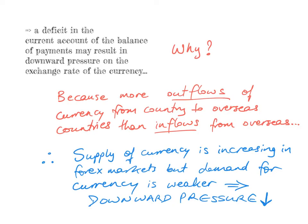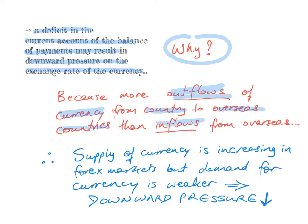The IB Economics Syllabus lists the outcome as: explain that a deficit in the current account of the balance of payments may result in downward pressure on the exchange rate of the currency. So why is this the case? Well, if there's a deficit on the current account, this means that there are more outflows of the country's currency from the country to overseas countries than there are inflows of foreign currency from overseas.